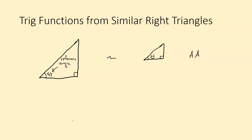Just like with special right triangles, where any 30-60-90 degree triangle must be proportional to each other, we can expand that to any right triangle. Any right triangle with the same reference angle theta — say 15 degrees — must all be proportional to each other. If we know those ratios, we can figure out side lengths. We label the side lengths based on the reference angle we're talking about.